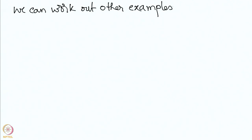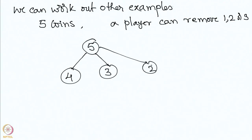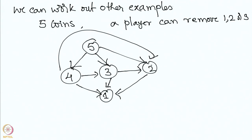For example, if we take the subtraction game — the take-away games — with 5 coins, and a player can remove 1, 2, or 3 coins at any point of time. In this case, 5 is the start position. From 5 one can go to 4, from 5 to 3, from 5 to 2. From 4 one can go to 2, from 4 to 1, from 3 to 1, from 3 to 2. Position 1 is a terminal position — you can remove it and no more moves remain.